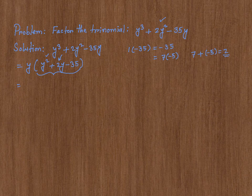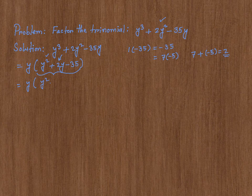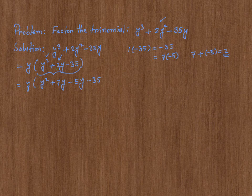So, what I'm going to do is this: y times y squared plus 7y minus 5y minus 35. Please note the following: this 2y I have rewritten as 7y minus 5y.